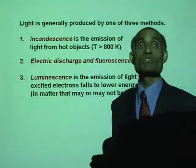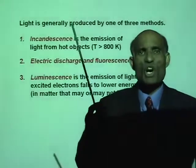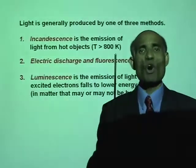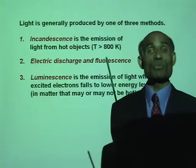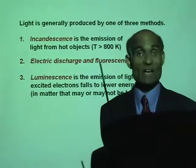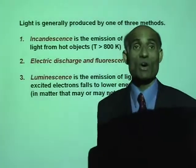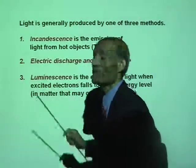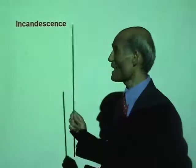A third method is luminescence — the emission of light when excited electrons fall to their normal energy levels. I will talk about that also. So we will discuss these three methods of producing light. Let's talk about incandescence.